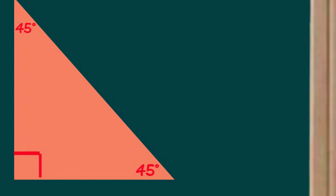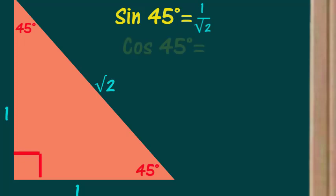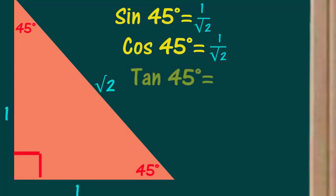It has sides 1, 1, and a hypotenuse of √2. The sine of 45° is 1/√2, opposite over hypotenuse. The cosine of 45° is also 1/√2, the adjacent over the hypotenuse. The tangent of 45° is 1/1, which is just 1.